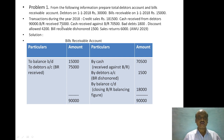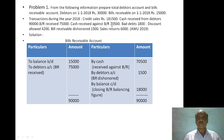Then bills receivable account — these are two accounts. The bills receivable account debit side and the debtors credit side. Then cash received against bills receivable account. Then bad debts go to the total debtors account. Discount allowed goes to the debtors account credit side. Bills receivable discount affects both the bills receivable account and the debtors account. Bills receivable account will be credit side. Sales returns will go to the total debtors account.